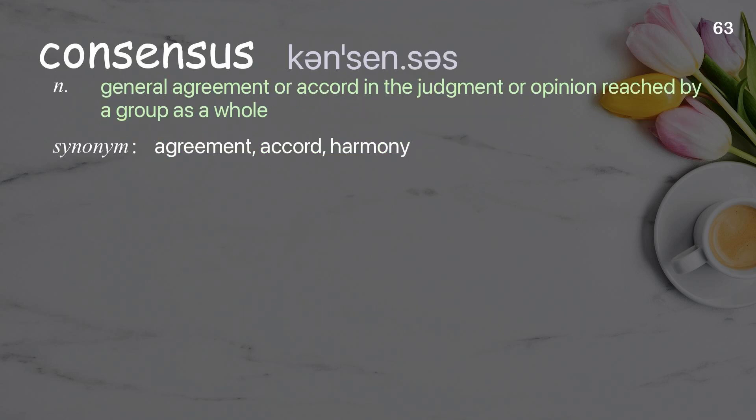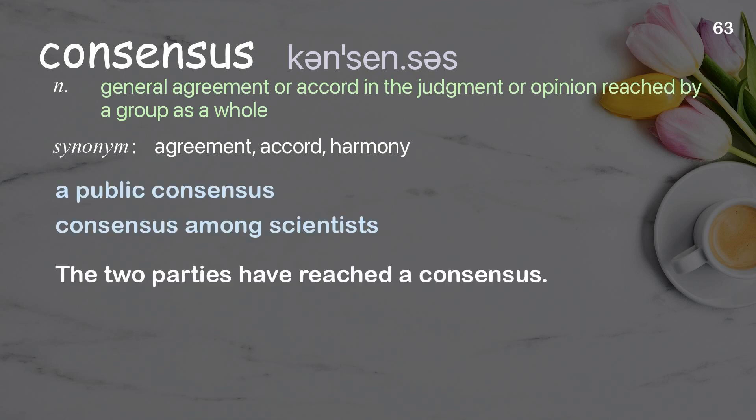Consensus: general agreement or accord in the judgment or opinion reached by a group as a whole. Examples: a public consensus, consensus among scientists. The two parties have reached a consensus.